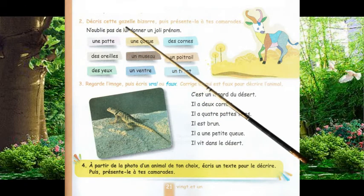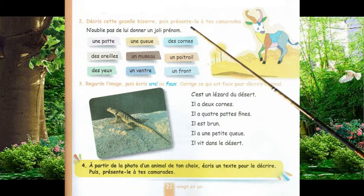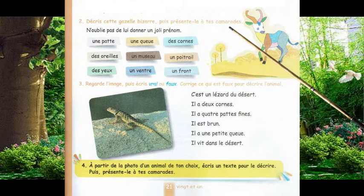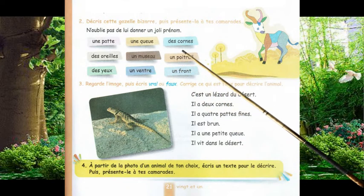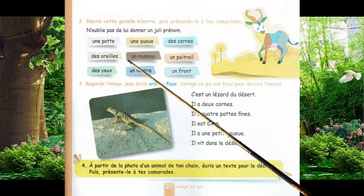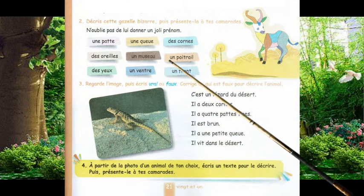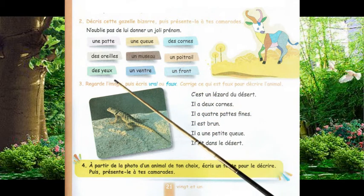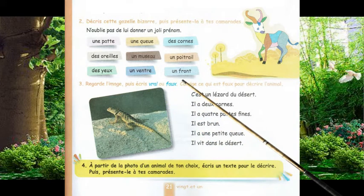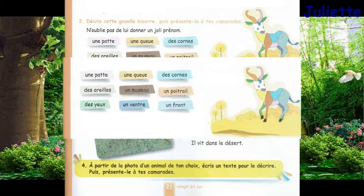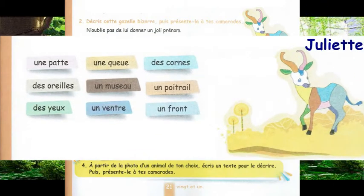Décris cette gazelle bizarre, puis présente-la à tes camarades. N'oublie pas de lui donner un joli prénom. Une patte, une queue, des cornes, des oreilles, un museau, un poitrail, des yeux, un ventre, un front. Cette gazelle s'appelle Juliette. Elle a un grand nombre de couleurs variées.